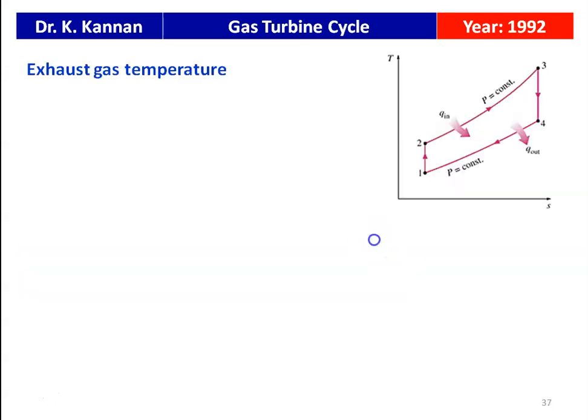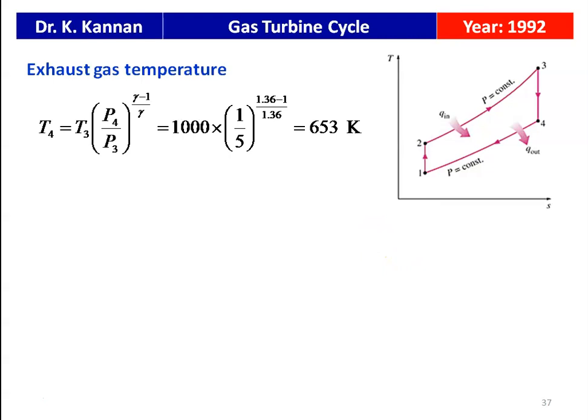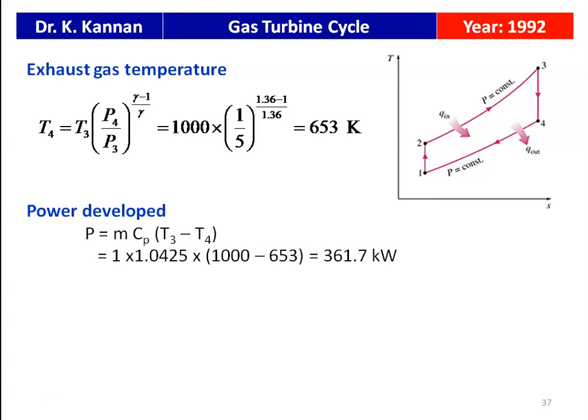This is the temperature-entropy diagram. The exhaust gas temperature T4 = T3 × (P4/P3)^((γ-1)/γ) = 1000 × (1/5)^(0.36/1.36) = 623 K. The power developed by the turbine P = M × Cp × (T3 − T4) = 1 × 1.0425 × (1000 − 653) = 361.7 kW.